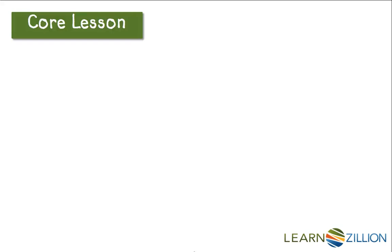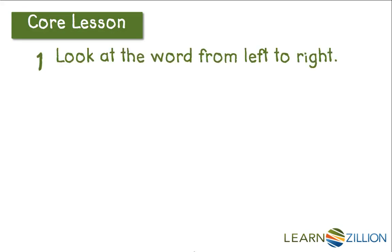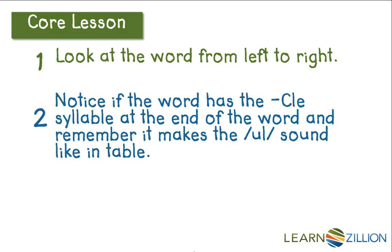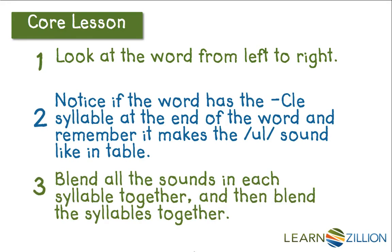Here are the steps I just did to read GURGLE — they're the same steps I used to read LADLE. First, I looked at the word from left to right. I noticed that it had two vowels, so it must be two syllables. When I did that, I also noticed it had a consonant LE syllable, and I remember that the LE makes the UL sound like in table. Then I blended the sounds in each syllable, and then blended the two syllables together to read the word.